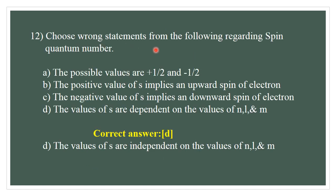Question number 12. Choose the wrong statement about spin quantum number. The possible values are +½ and -½ — this is correct. The positive value of S implies an upward spin of the electron — correct. The negative value of S implies a downward spin — correct. The value of S depends upon the values of N, L, M — this is wrong. The correct wrong statement is D; the correct statement is that the values of S are independent of N, L, and M.